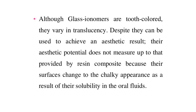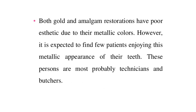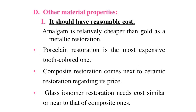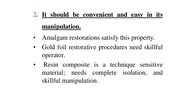Other material properties include reasonable cost and ease of manipulation. Amalgam is relatively cheaper than gold as a metallic restoration. Porcelain restoration is the most expensive tooth-colored option. Composite restoration comes next to ceramic regarding price. Glass ionomer restoration costs are similar or near to that of composite. Amalgam restorations satisfy the convenience and ease of manipulation property. Gold foil restorative procedures require a skillful operator. Resin composite is a technique-sensitive material needing complete isolation and skillful manipulation. No single material can fulfill all clinical needs.